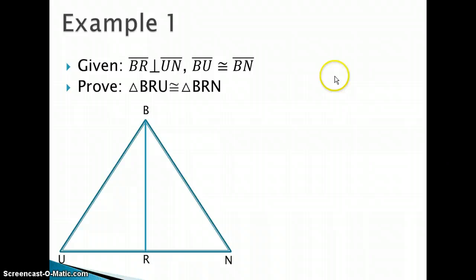So let's do an example. This will be our only example today because it kind of summarizes what we're doing. We are given that BR is perpendicular to UN, and I also know that BU is congruent to BN. And what I'm trying to show is that triangle BRU is congruent to triangle BRN.